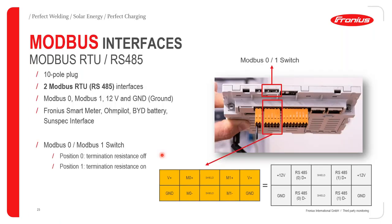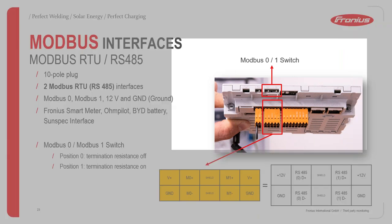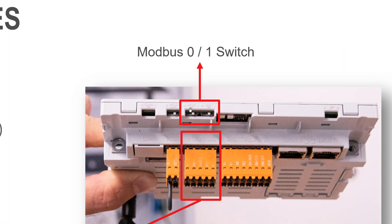One long push is for quitting service messages and for activation and deactivation of the key lock. Looking at the Modbus interfaces: we have a 10-pole plug with two available Modbus ports. To use any of the Modbus ports, you must activate it using the DIP switches — switching from position 0 to position 1.